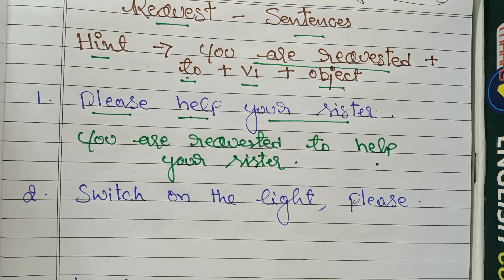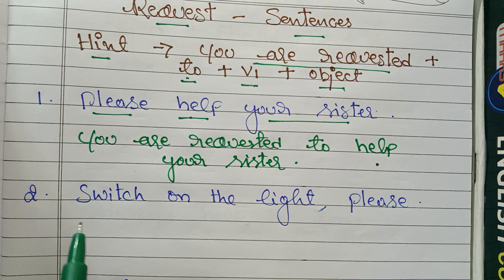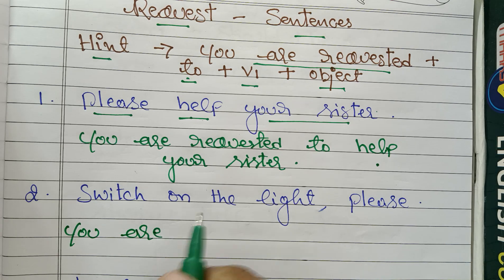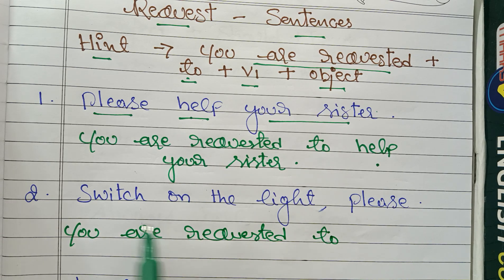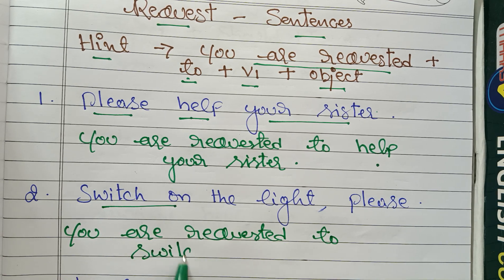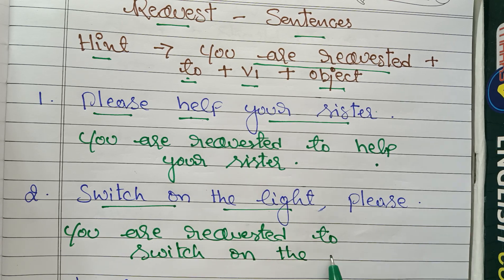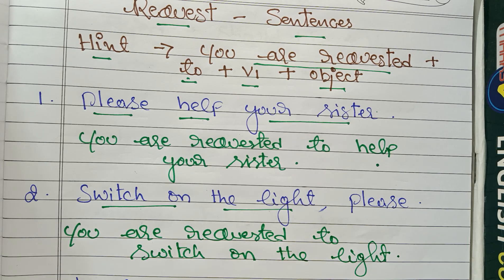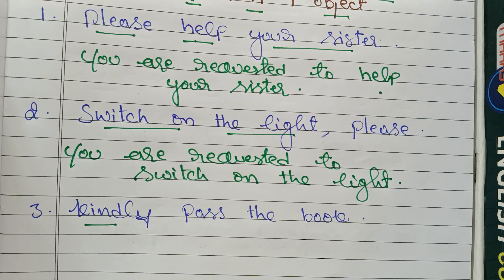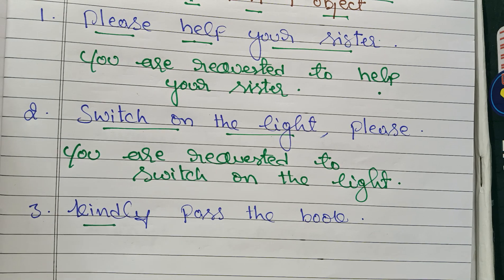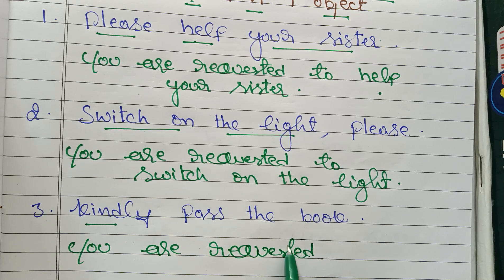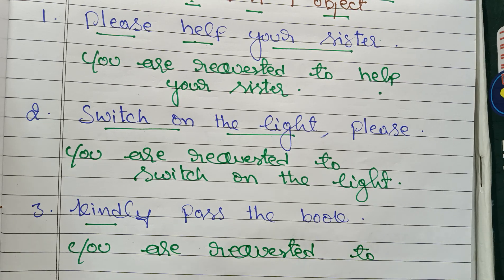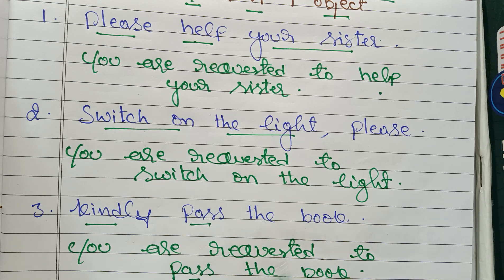Second example: 'Please switch on the light.' It is again a request sentence. Answer: 'You are requested to switch on the light.' Third example: 'Kindly pass the book.' Again a request sentence. Answer: 'You are requested to pass the book.' Structure: You are requested + to + V1 + object.